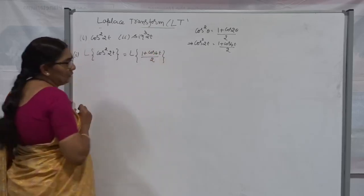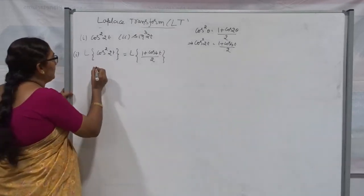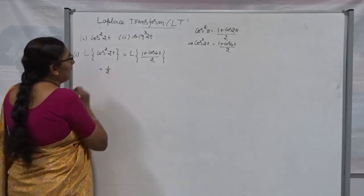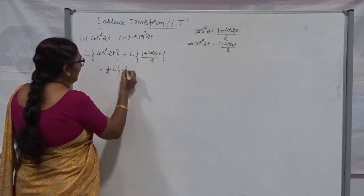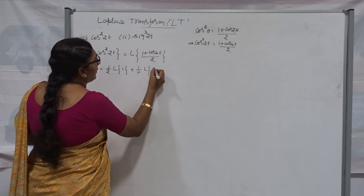Now, here we get two terms, but both the terms possible I have to find out Laplace. Therefore, I will go for which property? Linear property. While taking linear property, I will keep constant means 1 by 2 outside Laplace Transform of 1. And also 1 by 2 into Laplace Transform of cos4t.